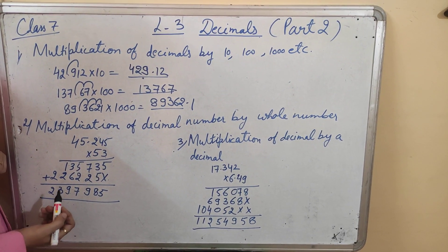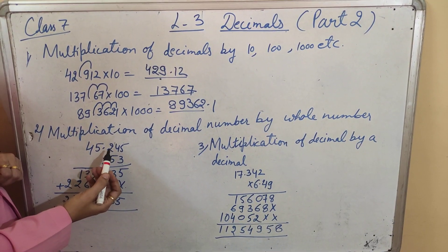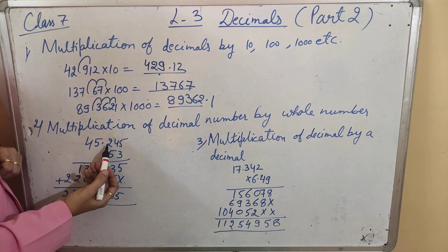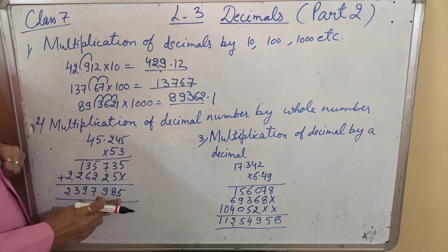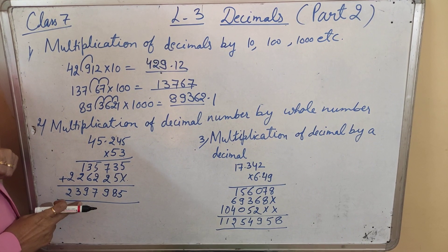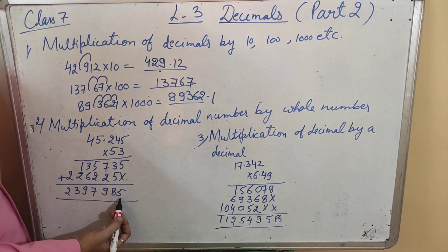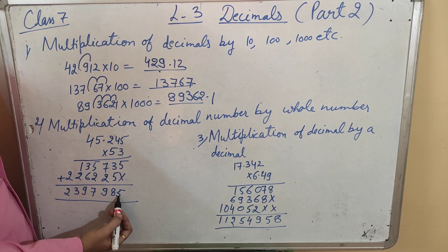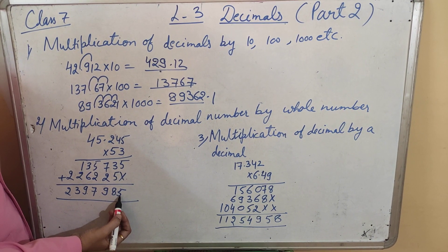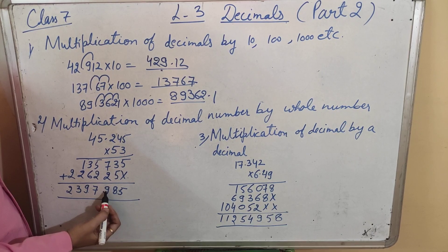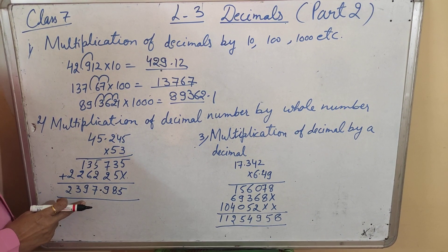After doing the multiplication, we have to count the decimal places of the multiplicand. So here there are 3 decimal places. In the answer, we have to count the decimal places from the right side — 3 places — and we have to put the decimal. After 3 digits, we have to put the decimal.